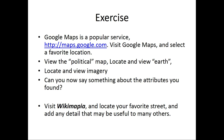Now we stop here — this part — and look at the exercises. Go to Google Maps, select a favorite location, look at the political map, locate and view Earth, and locate and view the imagery. Can you say something about the attributes you found there? Do that as an exercise — it's an open-ended one. You should also visit the site called Wikimapia, locate your favorite street, and if you find that some details can be added which are useful to others, do add them. These are open-ended exercises, not going to be graded, but to help you get familiarity with this. There is going to be a part two — if you are interested, you should visit that as well.